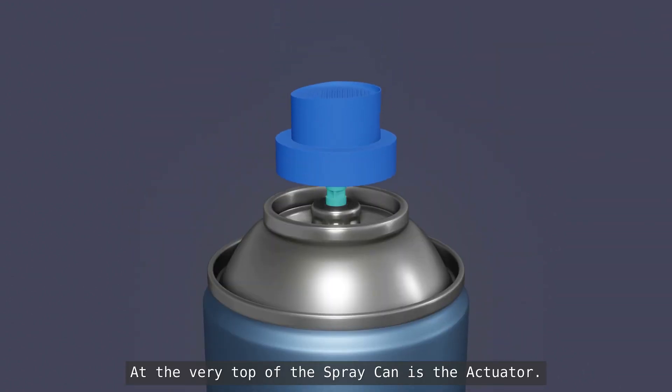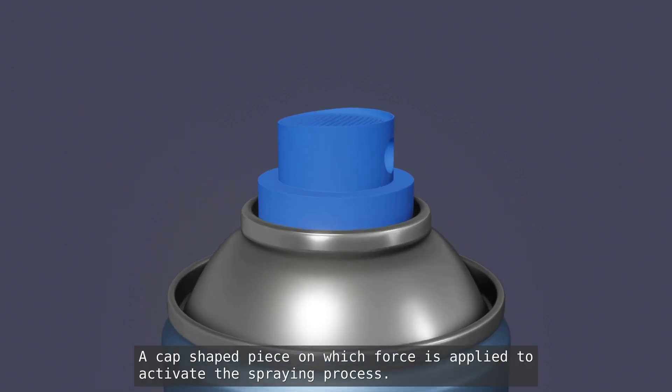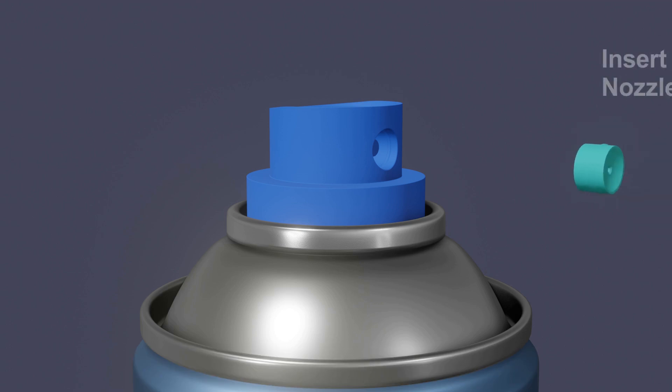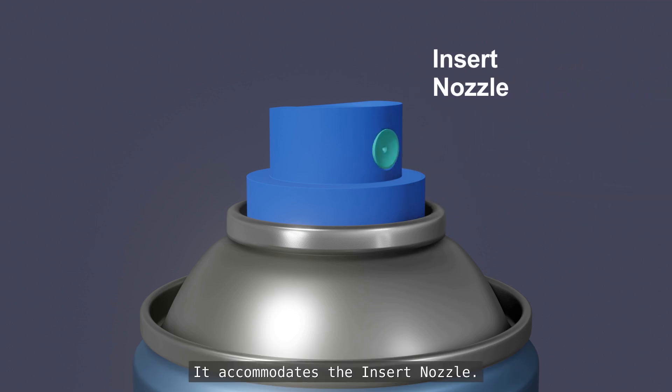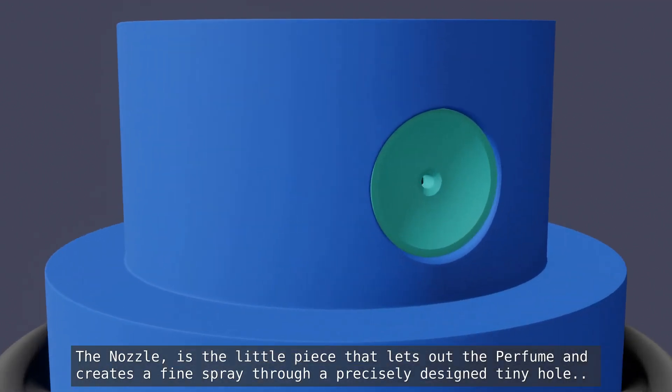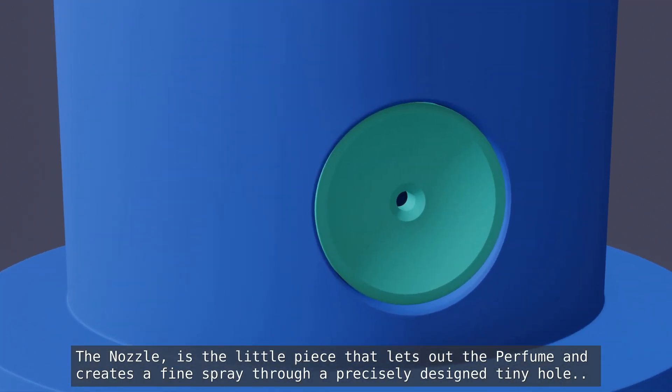At the very top of the spray can is the actuator. A cap-shaped piece on which force is applied to activate the spraying process. It accommodates the insert nozzle. The nozzle is the little piece that lets out the perfume and creates a fine spray through a precisely designed tiny hole.